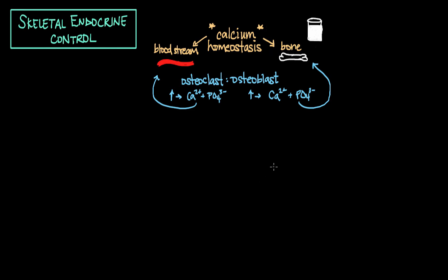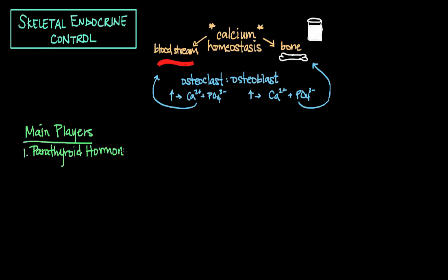What are the main hormones responsible for maintaining this calcium homeostasis — this balance between calcium and phosphate in the bloodstream and in bone? The main players are parathyroid hormone, calcitonin, and a third hormone called calcitriol, which is really just the active form of vitamin D.